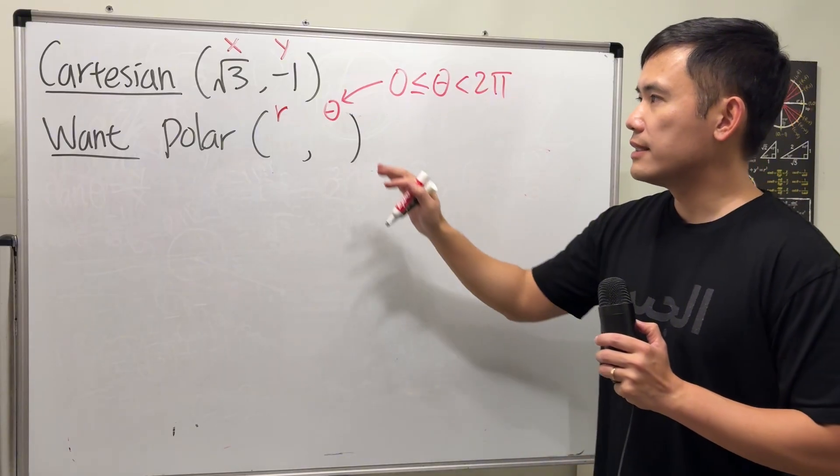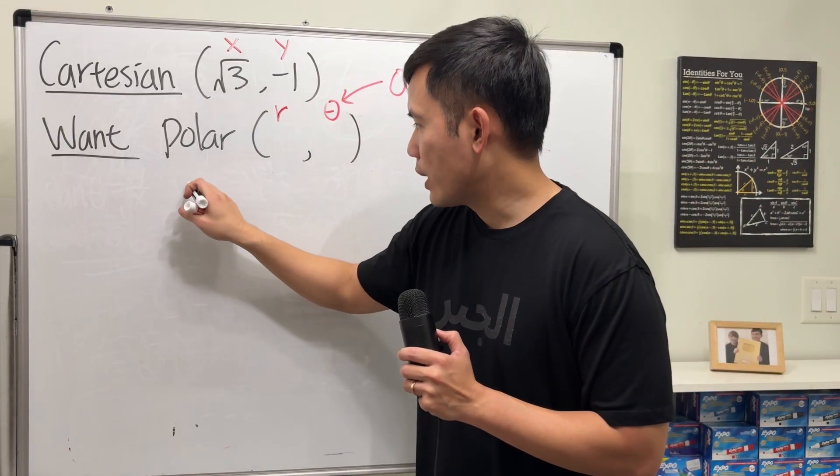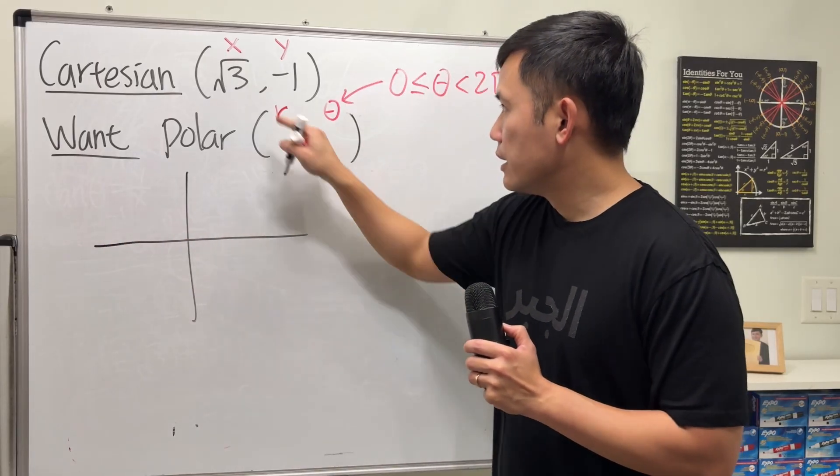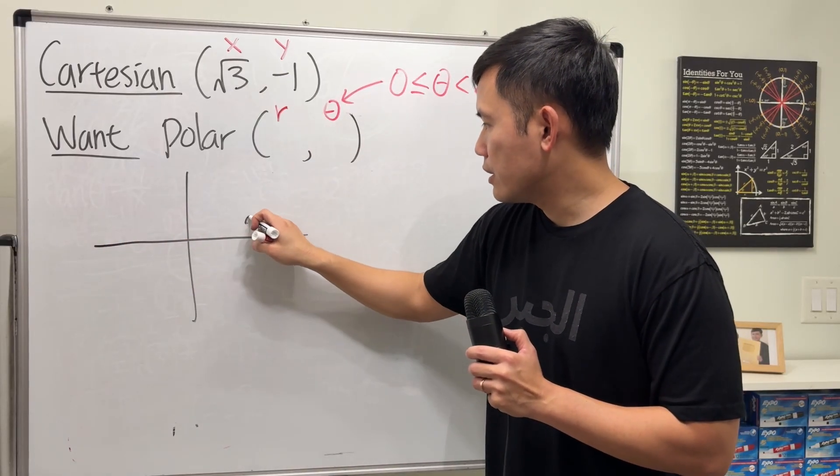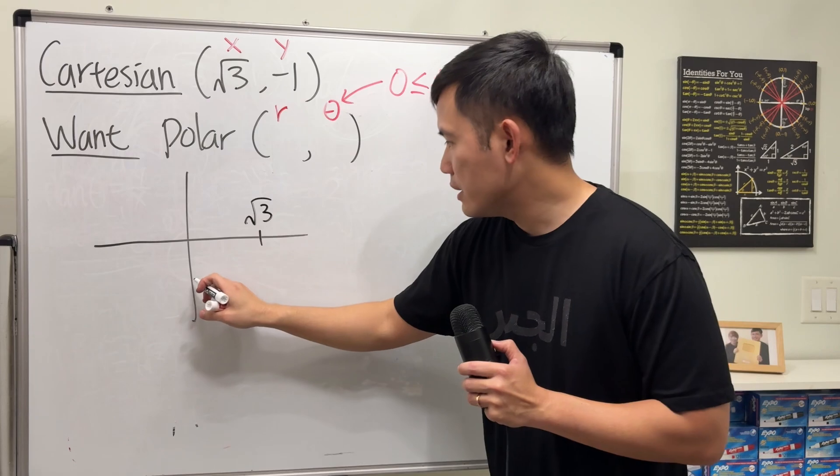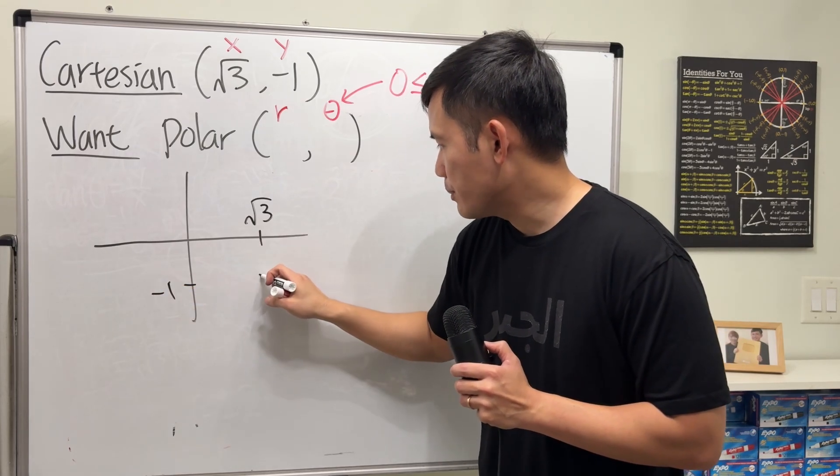And to start, let's just go ahead and draw a picture first. So right here, let's say square root of 3 is right here, and negative 1 is right here. So this is the point that we want.